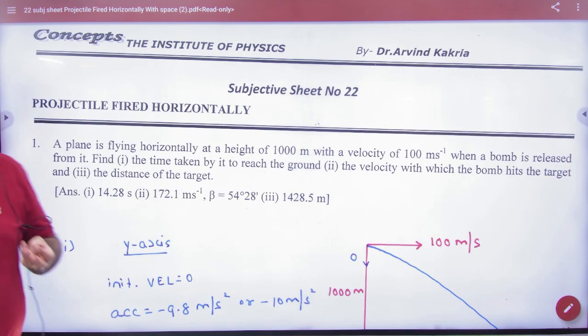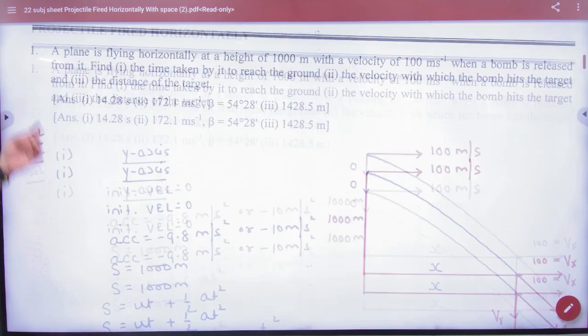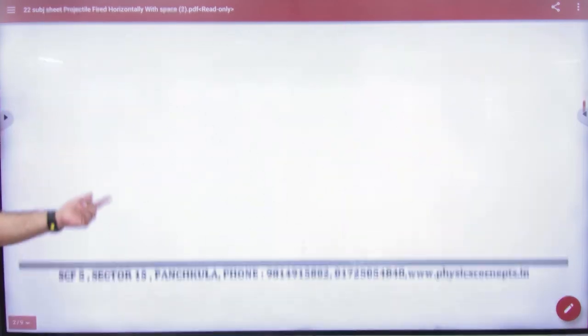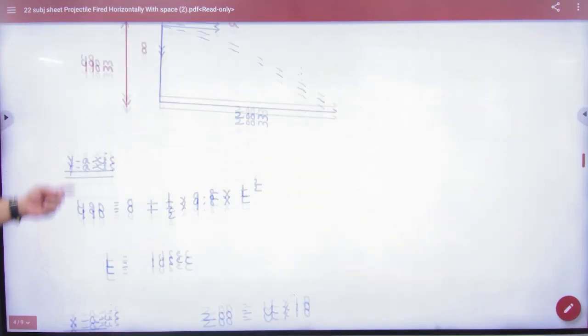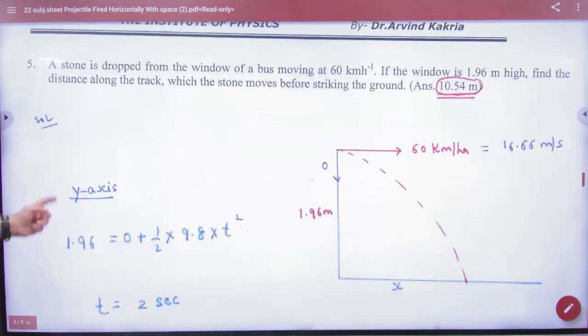In the subjective sheet number 22, how many people have doubted from 1 to 5? Which question? Fourth. Question number fourth.